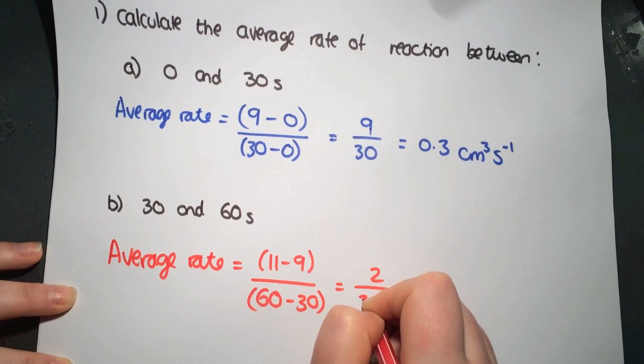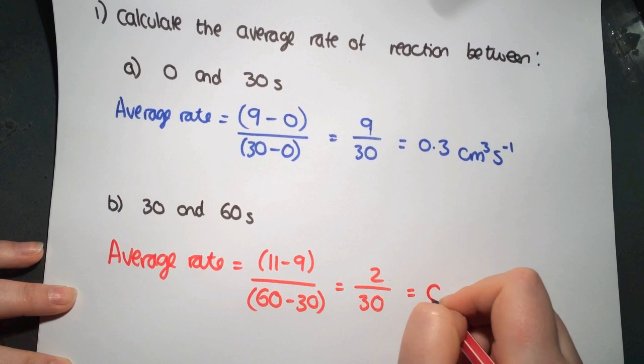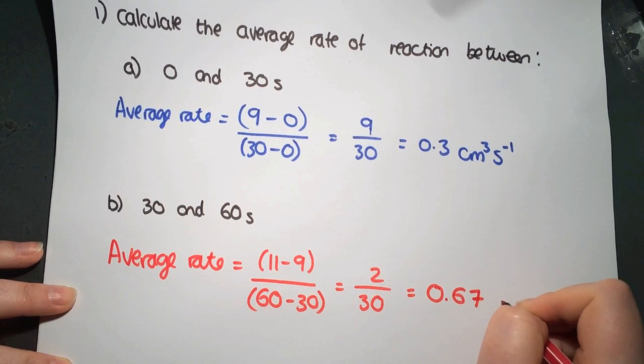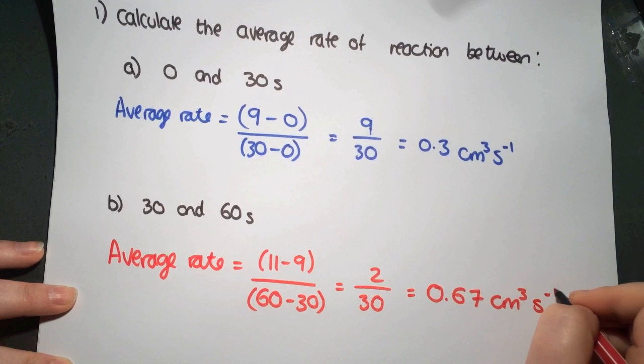So that will give you 2 divided by 30 equals 0.67. And again, it's centimeters cubed. It's volume per second. So s to the minus 1.